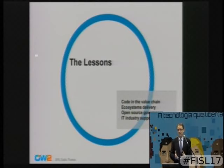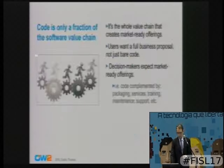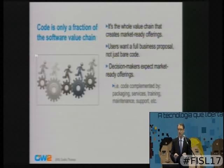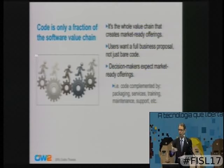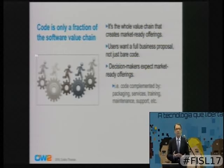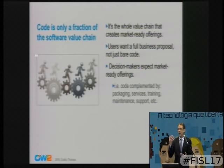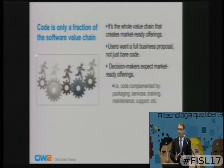Now, what about our lessons? I have four simple lessons. The first one: code is only a fraction of the software value chain. It's the whole value chain that really creates market value for a piece of software. Users want a full business proposal, and the average decision maker wants a value proposal they can compare with proprietary vendors.